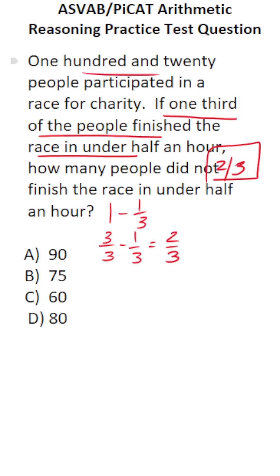Now, there are 120 people who participated in this race, and two-thirds of them did not finish it in under half an hour. So we're going to do 120 times two-thirds.